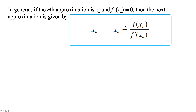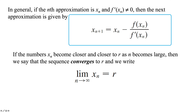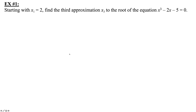We can repeat this process over and over — this is exactly what most graphing calculators do to find zeros, and this is how rounding errors occur. If we do this an infinite number of times, x sub n will eventually equal r, the x-intercept or zero we're looking for.